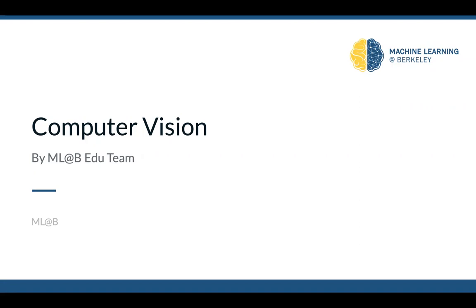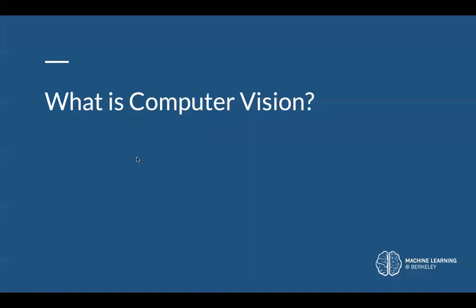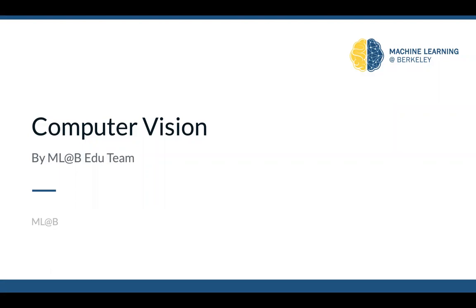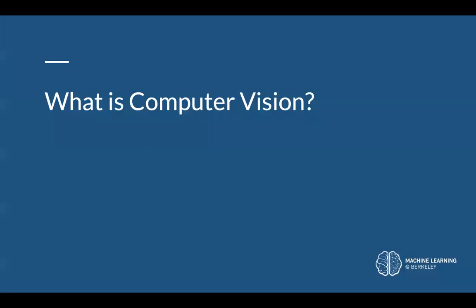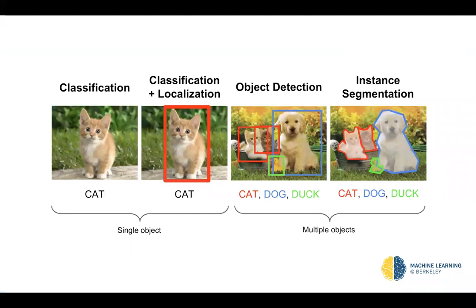This lecture will focus on the most basic ML model you see in computer vision. Before we motivate what that model looks like, let's ask ourselves what computer vision even is. At a high level, computer vision is the field of AI that deals with extracting information from an image. At a low level, it's a set of tasks revolving around classification, detection, segmentation — anything requiring a machine to have a semantic understanding of what's going on inside an image.